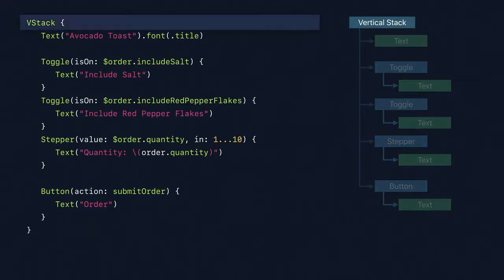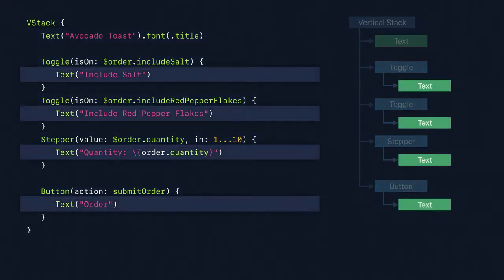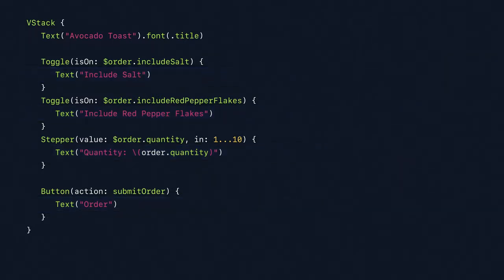We see the stack at the root, to the text and controls contained in the stack, to the individual text labels contained in each of our controls. What you don't see are calls to functions like addSubviews anywhere. Instead of building up our view hierarchy piece by piece, we initialize it as a complete composed structure.